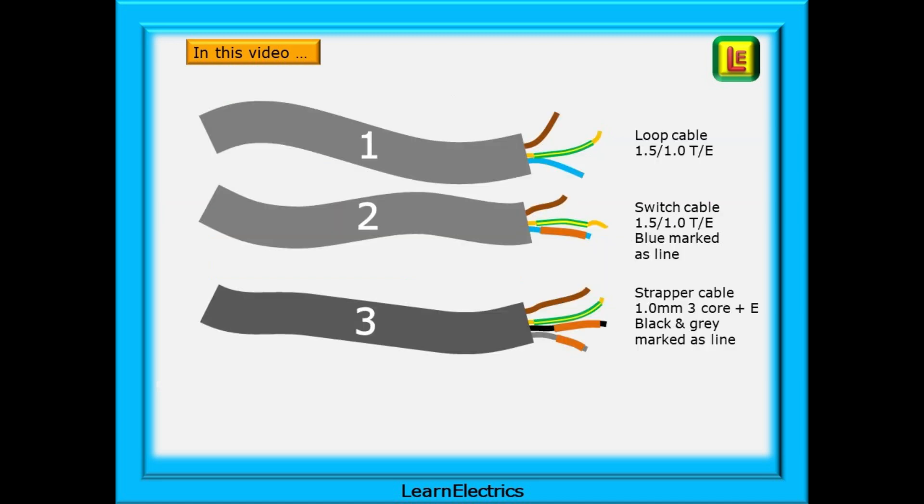Three cables will be used in the drawings. Cable 1 is the loop cable from the consumer unit to the ceiling rows in 1.5 by 1 millimeter twin and earth. Cable 2 is also 1.5 by 1 millimeter twin and earth and this is the switch cable. Notice that the blue conductor has brown sleeving over the end to signify that at some point this conductor will have 230 volts or more on it.